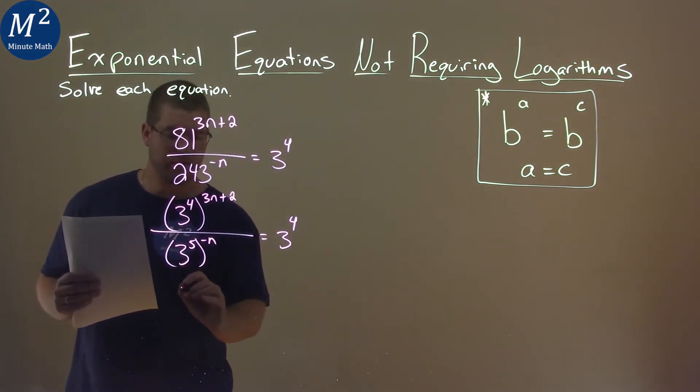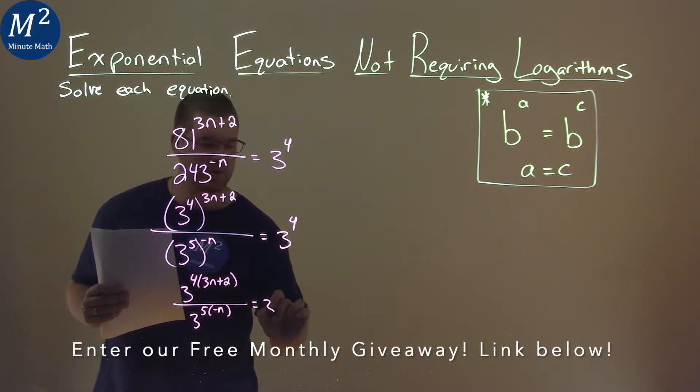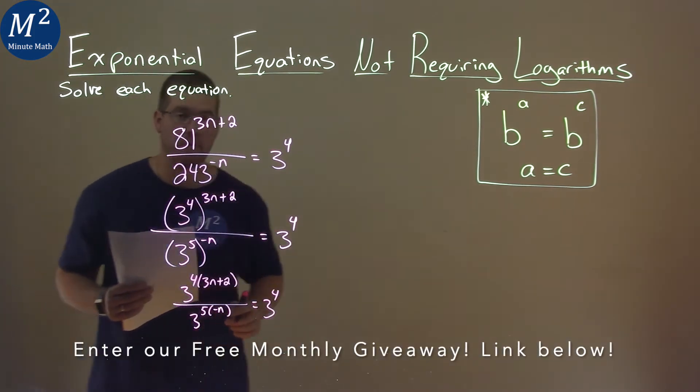So we would have now 3 to the 4 times 3n plus 2 power over, same thing here, 3 to the 5 times the negative n, and that's equal to 3 to the 4th power there.